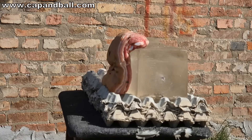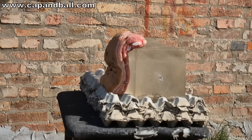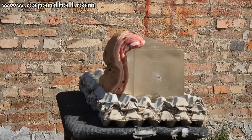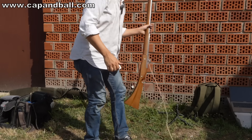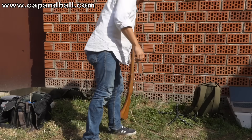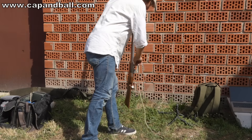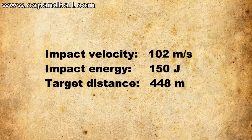At this distance the enemy does not have a chance. The bullet peels through the skin, the meat, and the gelatin block. Only the felt wad bounced off the skin. Our next velocity is 102 meters per second — that is 150 joules of kinetic energy, corresponding to 448 meters of target range.